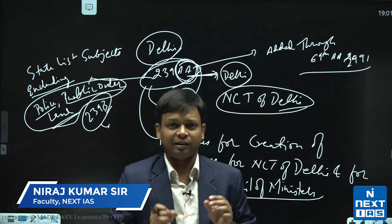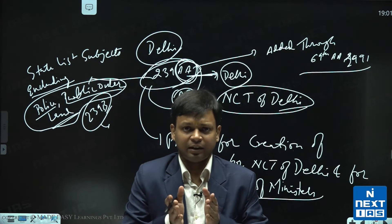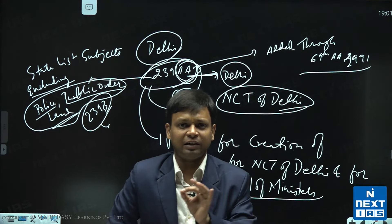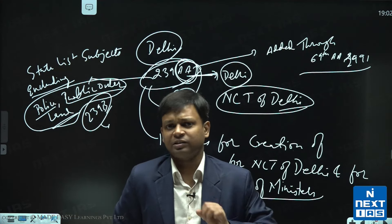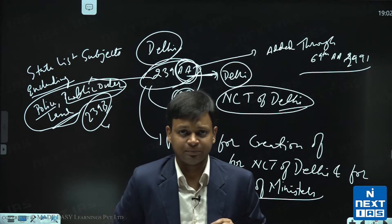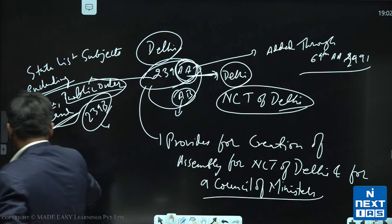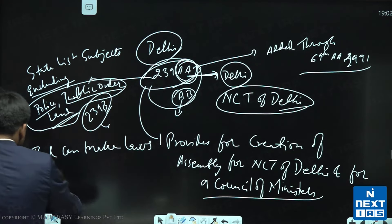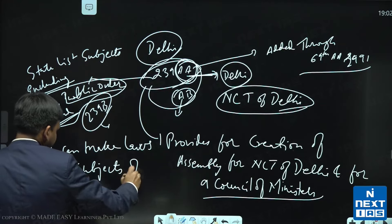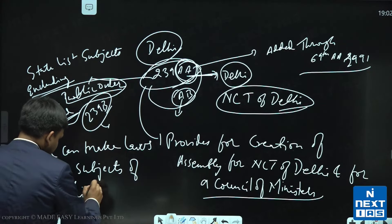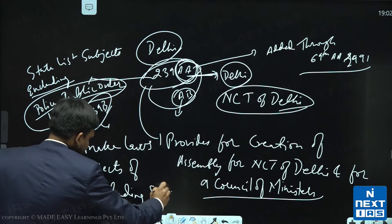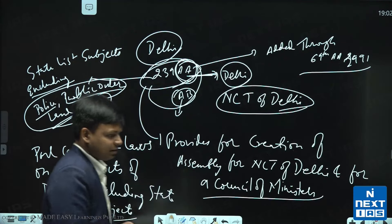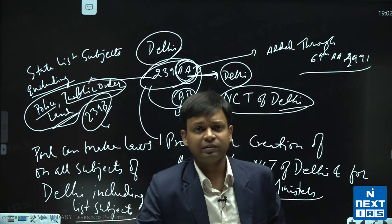This is where the controversy has occurred. Last year Supreme Court ने judgment दिया, we will talk about that judgment. The center had brought an amendment to the Delhi Act, Government of NCT of Delhi Act 2023 में एक amendment आया. Supreme Court के judgment को overrule करने के लिए amendment लाया. Parliament can make laws on all subjects of Delhi including the state list subjects.